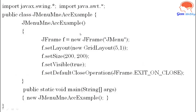Before we enter into this demonstration, here is the basic code that is needed. First you have to include the necessary packages and create a class. Inside the class, define a constructor. Inside the constructor, include the code to create a frame and display it on the screen. Inside the main method, call the constructor.